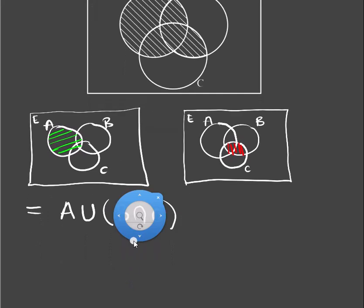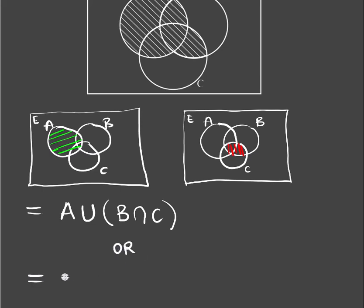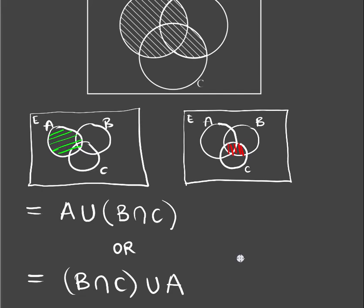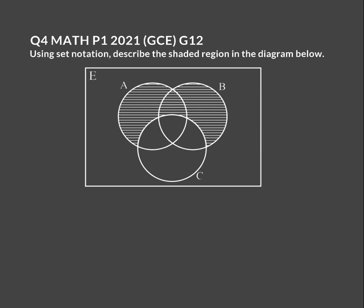There's another way of writing the same answer. You could also write it starting with B intersection C and then say union A. Union and intersection can be written interchangeably — you can put the second part first and your answer will mostly be the same. So these are the two ways you could write the answer. Let's look at another question that goes a bit more into sets.